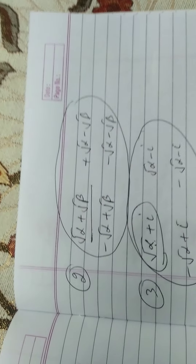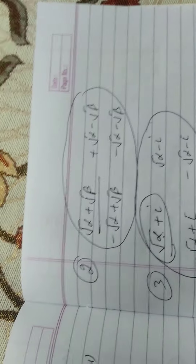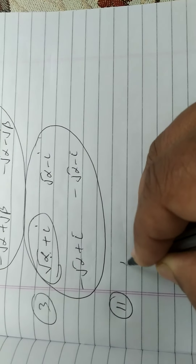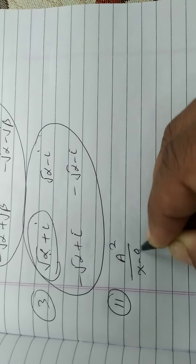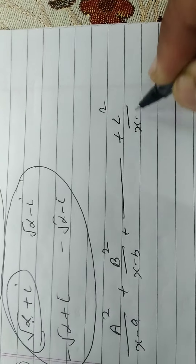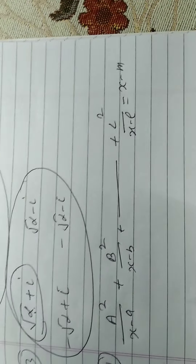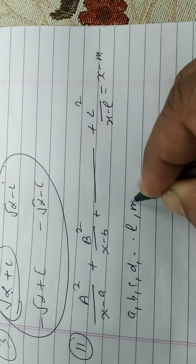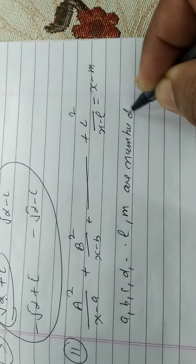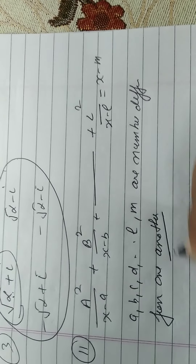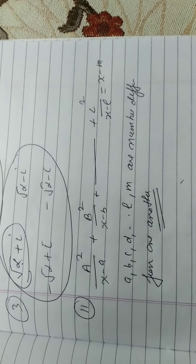Now we are studying one question. Show that this equation — जहाँ A, B, C, D, L और M are numbers different from one another — has no imaginary roots. हमें prove करना है कि इसका कोई भी imaginary root नहीं होगा।